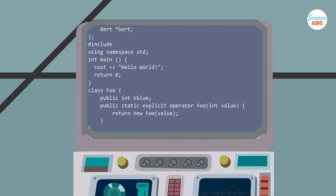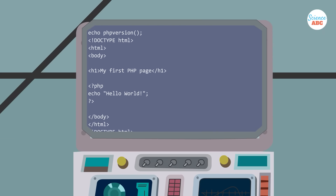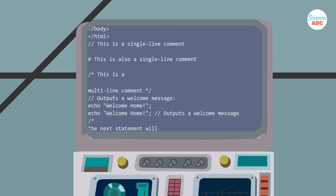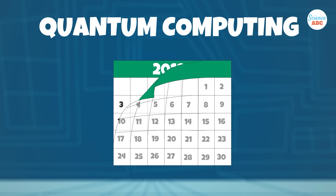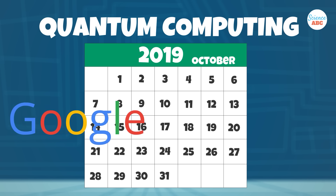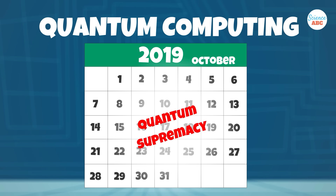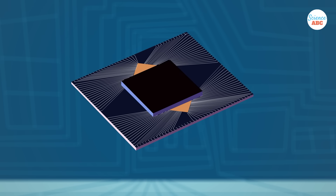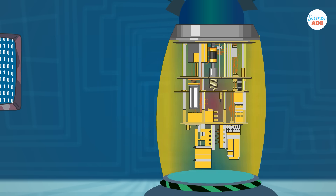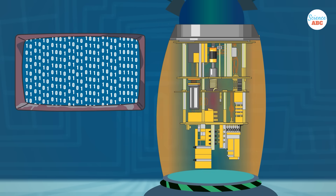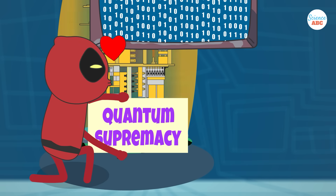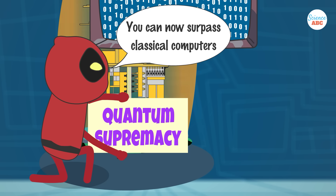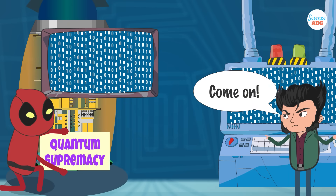In fact, some tech companies already possess operational quantum computers that serve as valuable resources for software development and programming languages. The most significant advancement in quantum computing in recent years occurred in October of 2019, when Google asserted that it had achieved quantum supremacy with its quantum computer, using their specialized Sycamore processor to perform a specific type of computation much faster and more efficiently than the most powerful classical supercomputer. This demonstration of quantum supremacy validated the concept that quantum computers can indeed surpass classical computers in specific tasks by leaps and bounds.